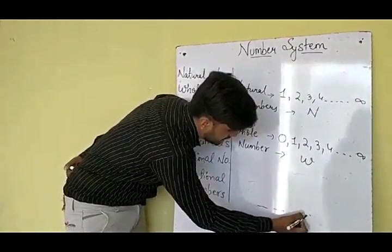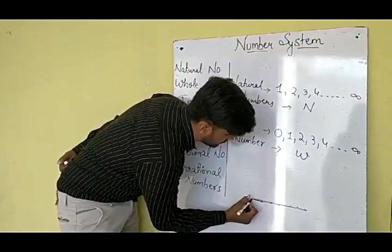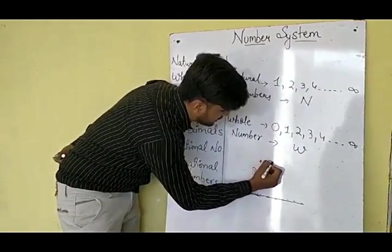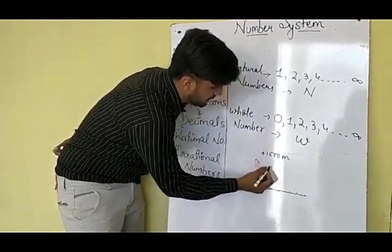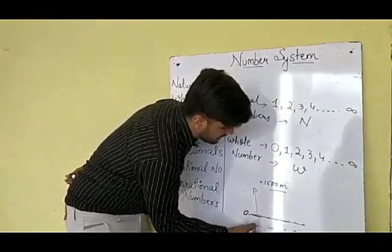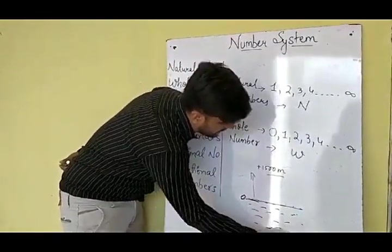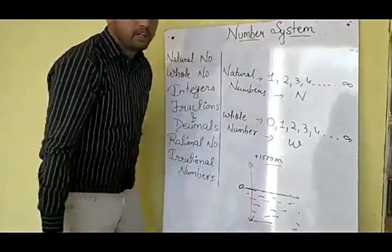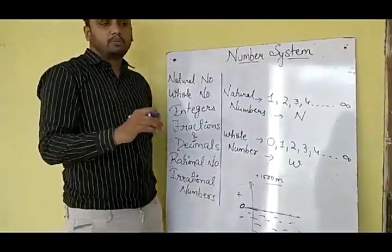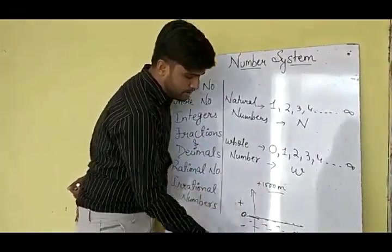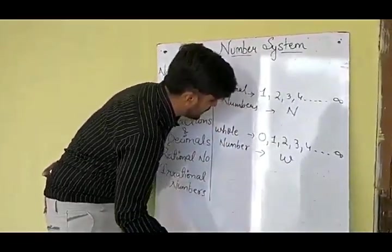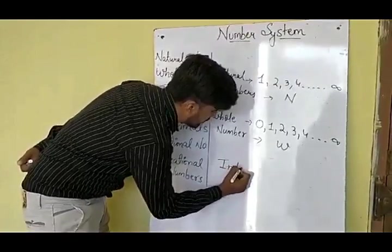Suppose this is the surface of a sea, and I am taking this surface of the sea as 0. All the things above it — suppose there is an aeroplane flying at a height of 1500 metres above the sea level. Now, if I want to calculate the depth of the sea, the depth will be on this side. The numbers above 0 will be positive, and the numbers below it will be negative. So there was a need of negative digits also. When negative digits are included together with whole numbers, they are called Integers.